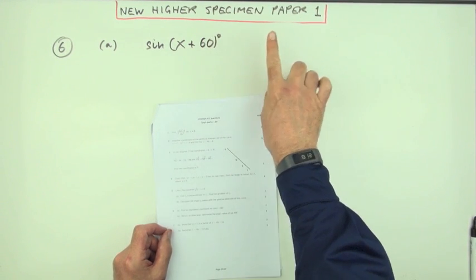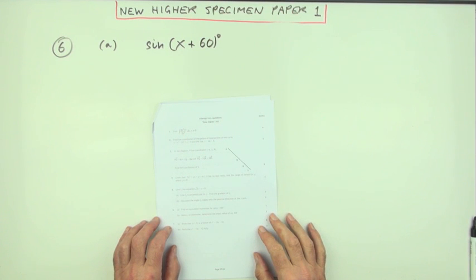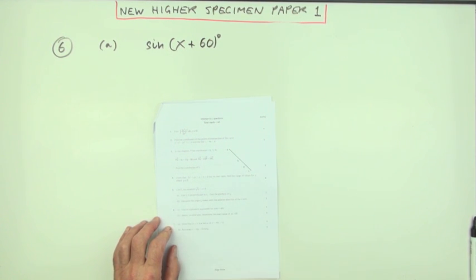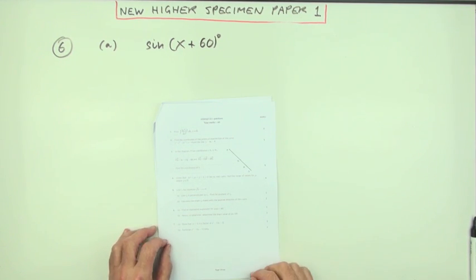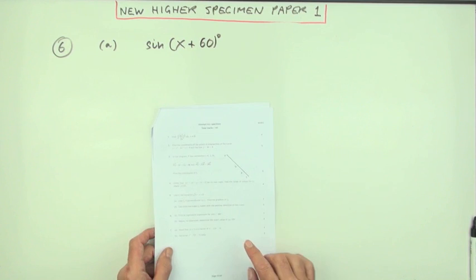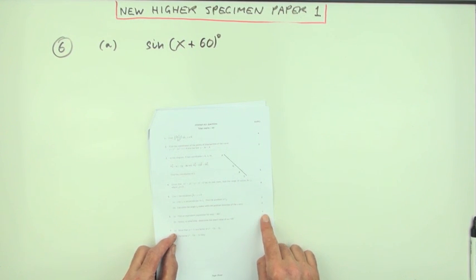Number six from the new Higher specimen paper number one, a little trig compound angle formula looking question. Just four marks. First part, quite ambiguously it's only one mark, so you're not sure how much to put down.